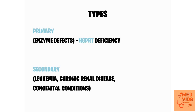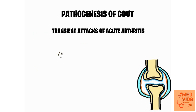In secondary gout, there will be some underlying disease condition manifesting with various features. For example, in chronic renal disease there will be manifestations of various features, and in addition to those there will also be gout. So if gout occurs secondary to some other condition, it is called secondary gout. The basic point is that gout is characterized by transient attacks of acute arthritis due to deposition of monosodium urate crystals inside the joint.